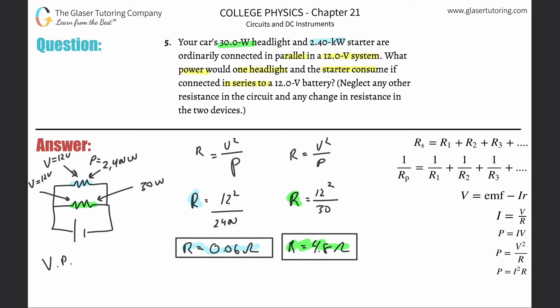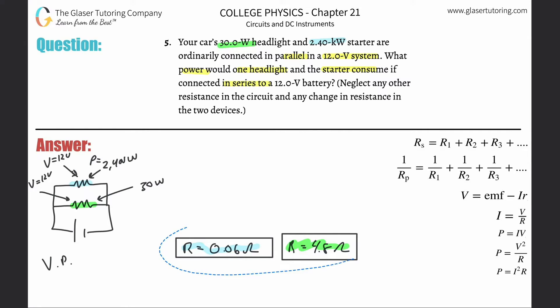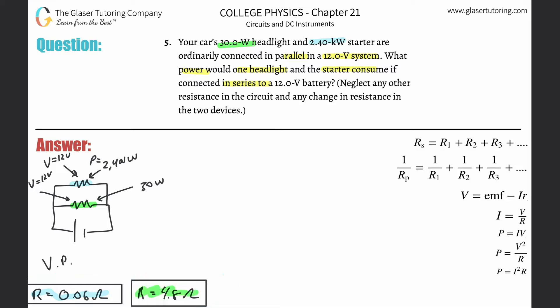So the blue resistor (starter) has about 0.06 ohms and the green resistor (headlight) has 4.8 ohms. Now the problem asks us to change the configuration: instead of parallel, these two components will now be connected in series. It doesn't matter which order they're placed — they just need to be in series. The green resistor is 4.8 ohms and the blue resistor is 0.06 ohms.